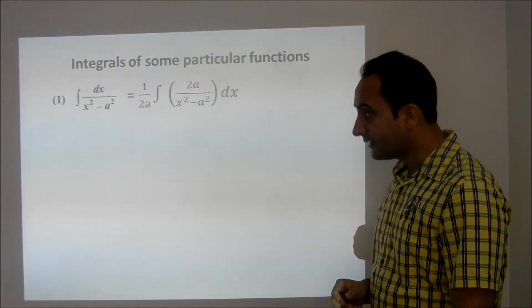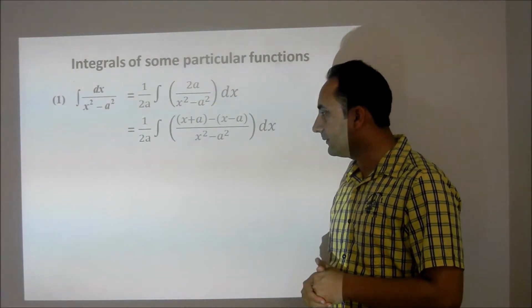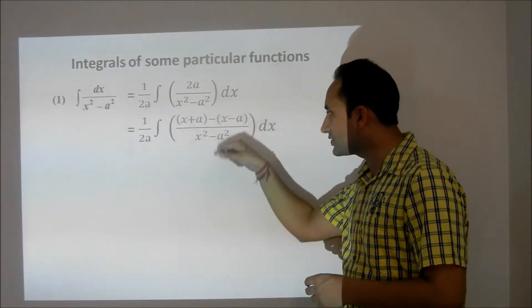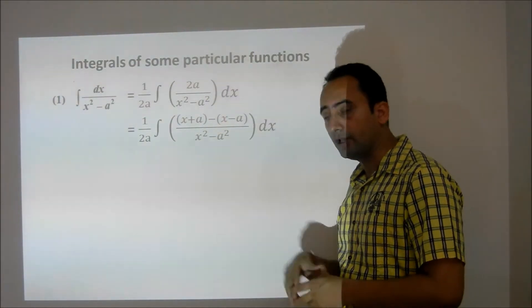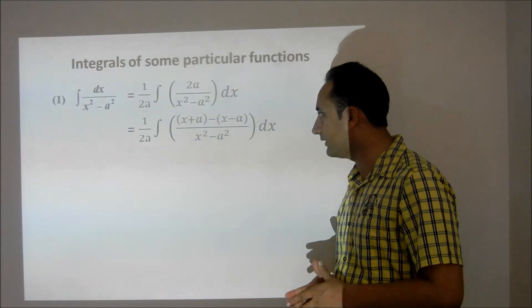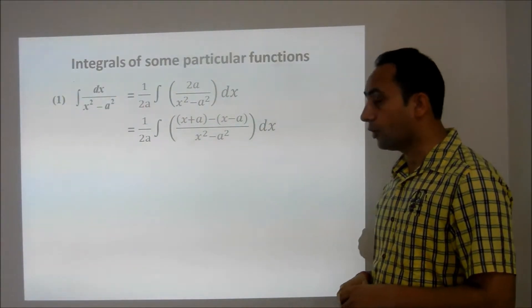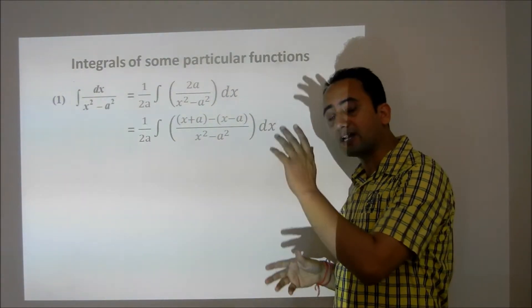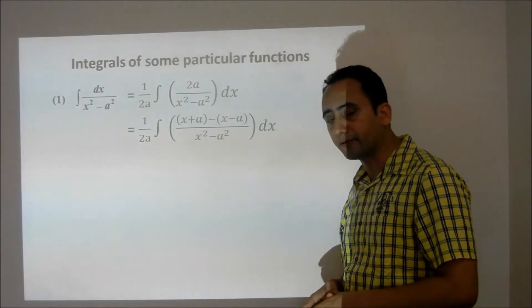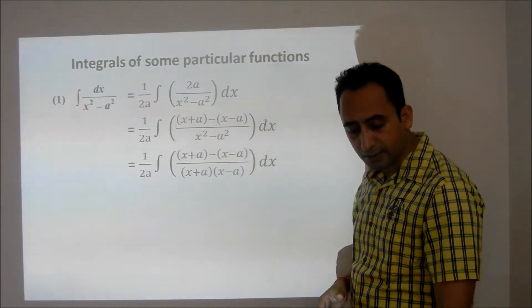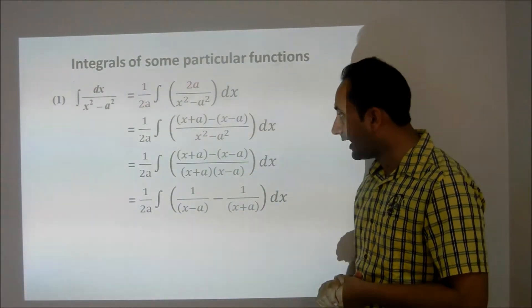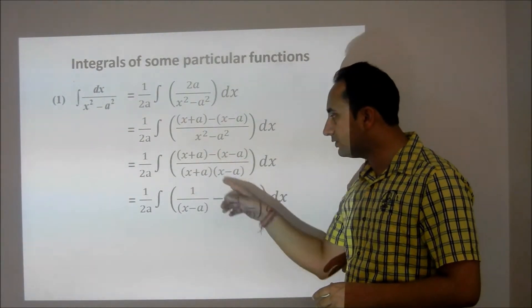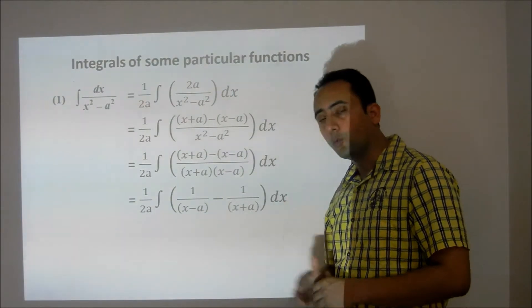Now, the same 2a can be represented as x plus a minus x minus a, because if you open this bracket, the x will get cancelled and a plus a will become 2a. So 2a can always be written as x plus a minus x minus a. In the next step, I will factorize the denominator and split the fraction. After splitting the fraction, I will be left with 1 upon x minus a minus 1 upon x plus a, as one term in every fraction will get cancelled.